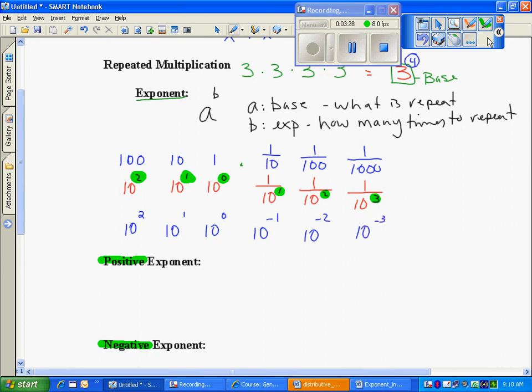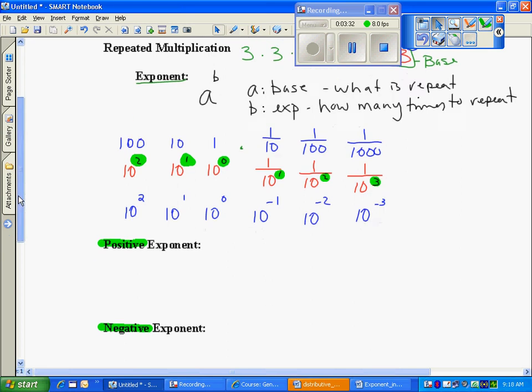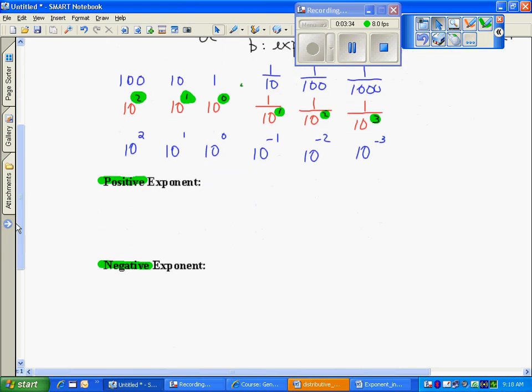And so a negative, therefore, looks to be a fraction. So when I have a positive exponent, that would be like my ten squared. That means I have ten times ten, or a hundred.